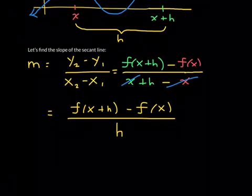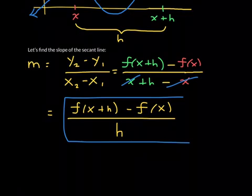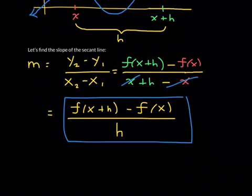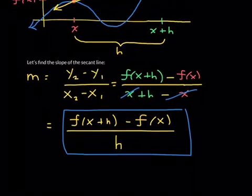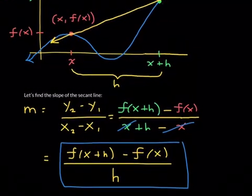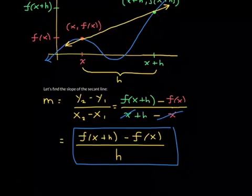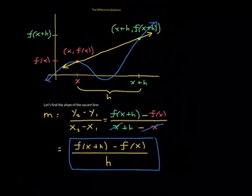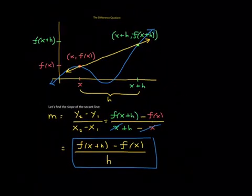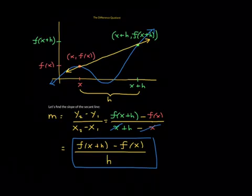Continuing to simplify: the numerator is f of x plus h minus f of x. In the denominator, x and negative x cancel, leaving just h. Ladies and gentlemen, this is called the difference quotient — you should box it and highlight it in your notes. It is the slope of the secant line: f of x plus h minus f of x, all over h.